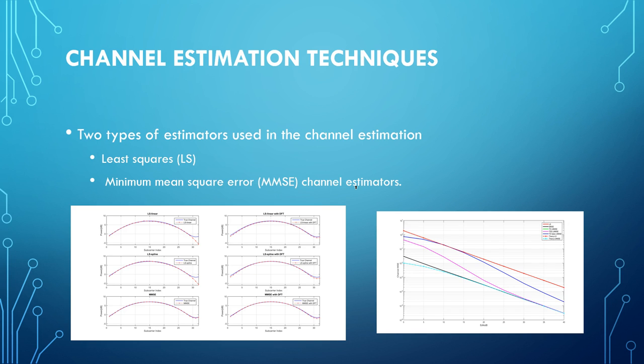The graph on the right shows the mean squared error performance when compared against the Eb versus N0 in the dB scale. The red line that shows the LS estimator performs worse when compared for the MSE of the channel estimators, whereas the LMSE that's the combination of the LS and MMSE performs much better and is the best performer among the three.